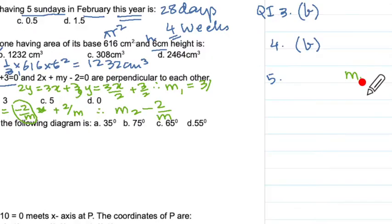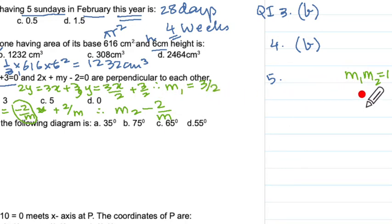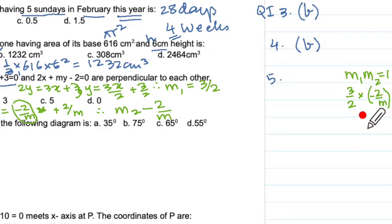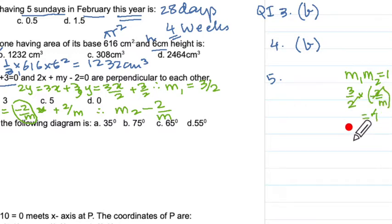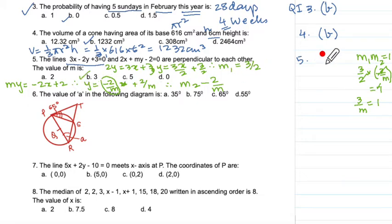Since the lines are perpendicular, m₁ × m₂ = -1. So (3/2) × (-2/m) = -1. The negatives cancel and 2 and 2 cancel, leaving 3/m = 1. Cross-multiplying gives m = 3, which is answer B.